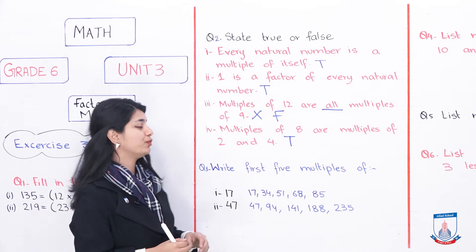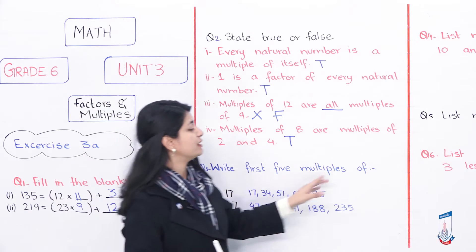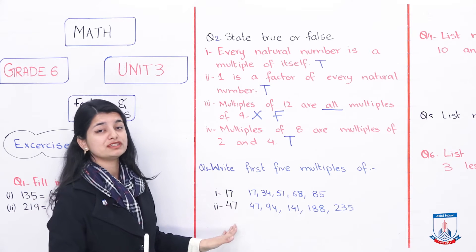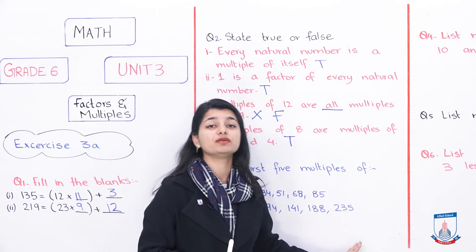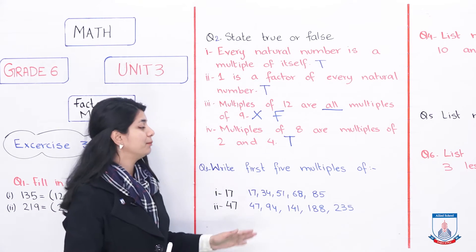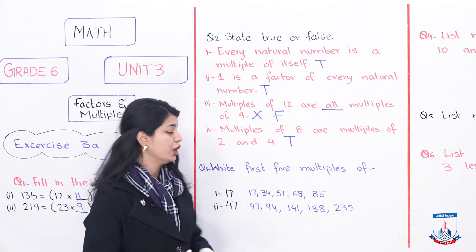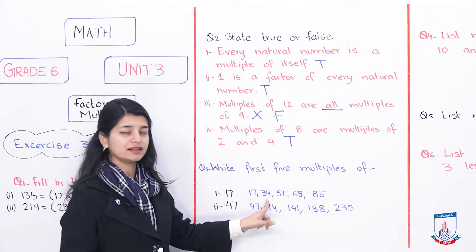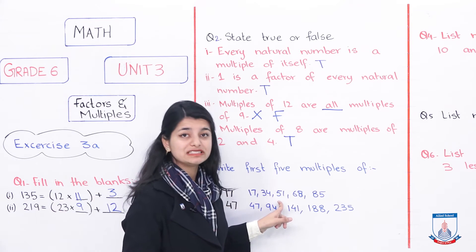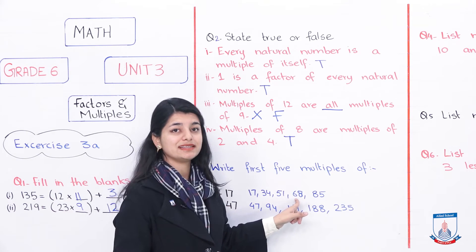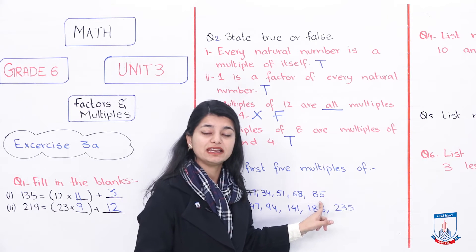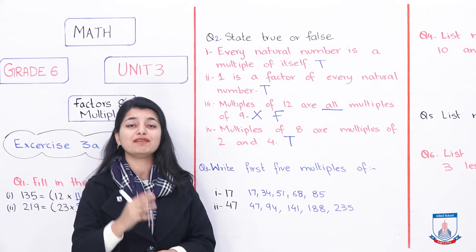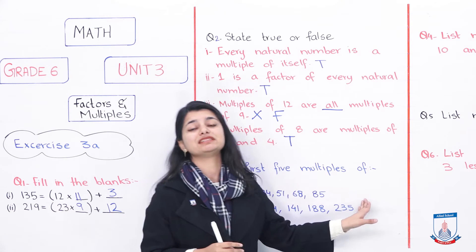Now look at question number 3: write the first 5 multiples. It's very simple — you have been given some numbers and you just multiply from 1 to 5. For 17: 17 ones are 17, 17 twos are 34, 17 threes are 51, 17 fours are 68, 17 fives are 85. These are the first 5 multiples of 17.